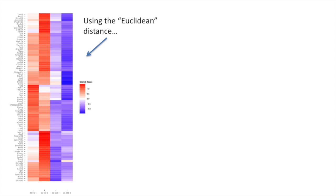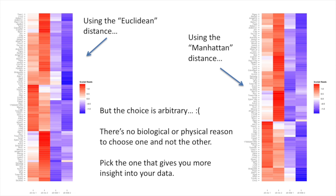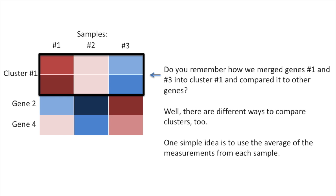Here's a heat map drawn using the Euclidean distance, and here's the same information drawn as a heat map but using the Manhattan distance. The heat maps are very similar, but there are also a few differences. The choice of distance metric is arbitrary — there is no biological or physical reason to choose one over the other. Pick the one that gives you more insight into your data.